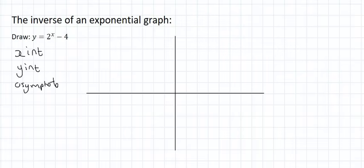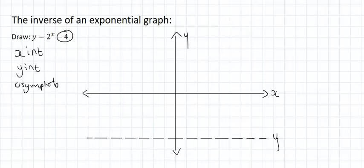So the asymptote is usually the easiest one. It's always going to be this number over here. So that's going to be a dotted line going across your graph at minus 4. And then we can just label that y equals to negative 4. So that's your asymptote done.